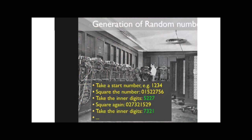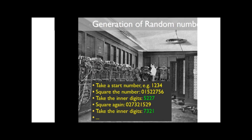The first software-based random number generators were used in the 1950s on the ENIAC, one of the big computers built during the Second World War. John von Neumann invented a procedure: start with a seed number, square it, take the inner digits, square again, and repeat. So you get something like 7, 3, 2, 1 and so on. This gives you a good random number to a certain extent.